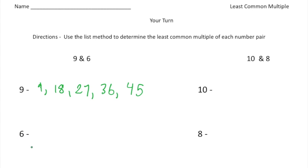For 6, 6 times 1 is 6. 6 times 2 is 12. And 6 times 3 is 18. And I'm going to stop there because here we have a common multiple. And that's the least one, right? So the LCM of 9 and 6 is going to be 18.